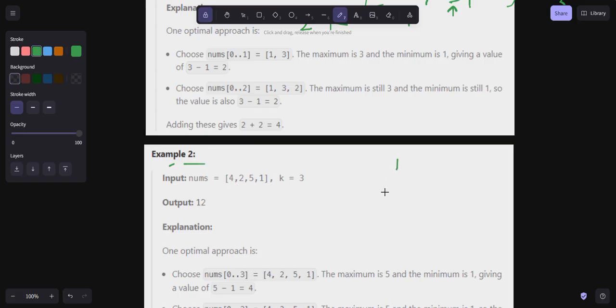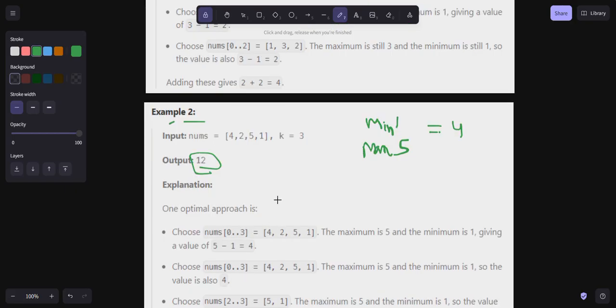max is five. Min is one, max is five, the difference is four. So 4×3 is 12. We have to choose three, so we can choose three like this: [4,2,5,1].